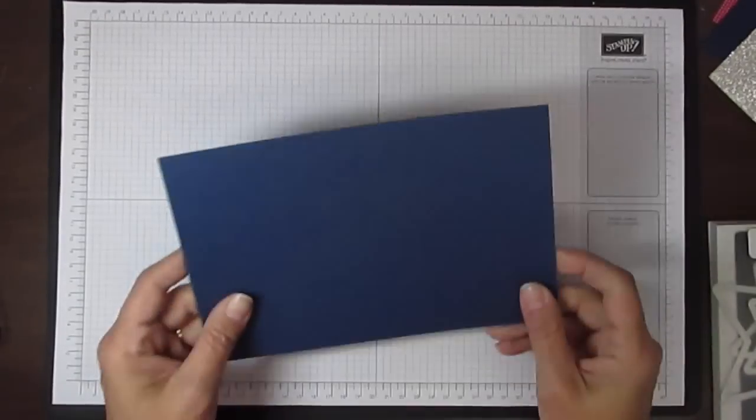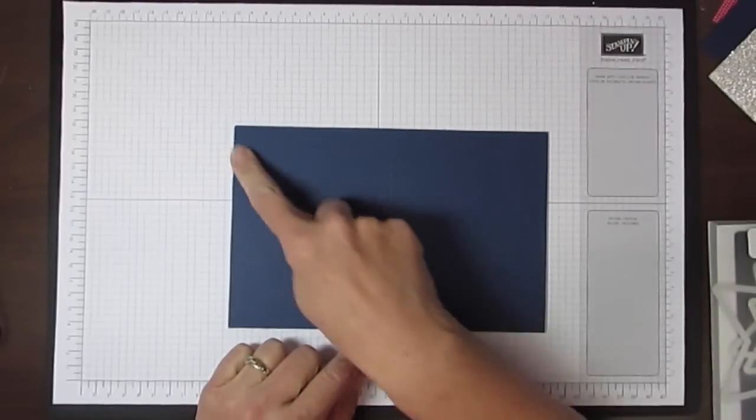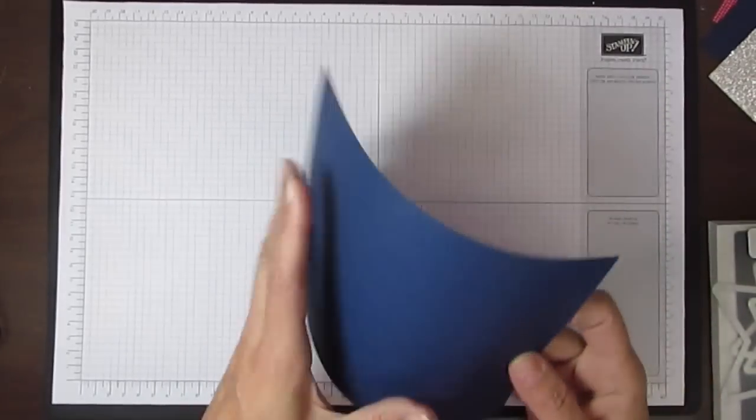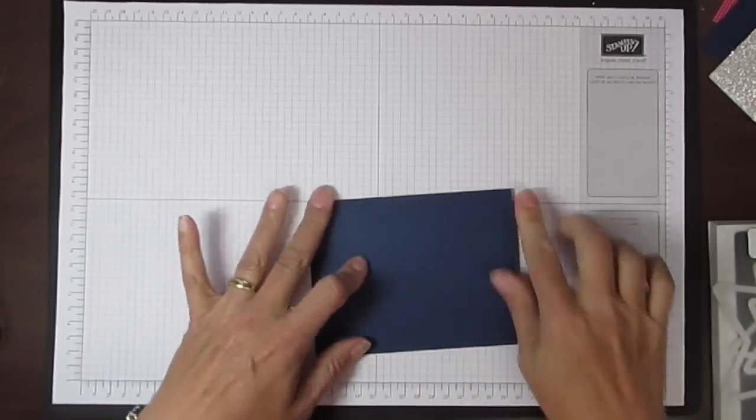To begin with, you're going to take a piece of Night of Navy. It's 8.5 by 5.5 inches, score it at 4.25. Just your regular base card size.